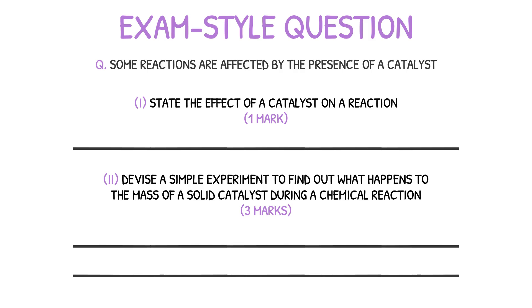These questions are nice and straightforward so we can get stuck straight in. Our answer to the first question can be written in one of two ways: you could either state that a catalyst increases the rate of a chemical reaction, or that it lowers the activation energy of a chemical reaction. Either of the two responses will achieve your mark. Our final question is just as straightforward — how can we devise a simple experiment to find out what happens to the mass of a solid catalyst during a chemical reaction?